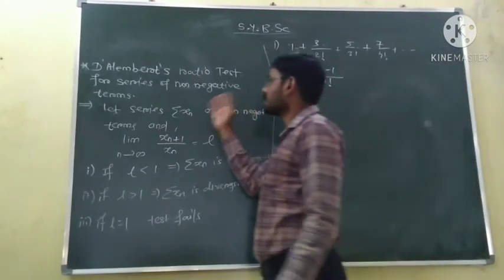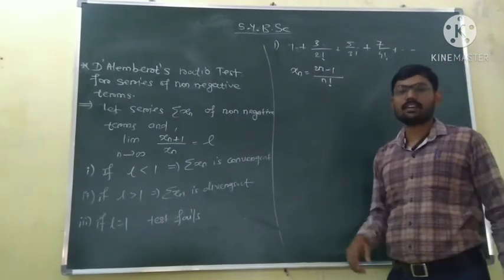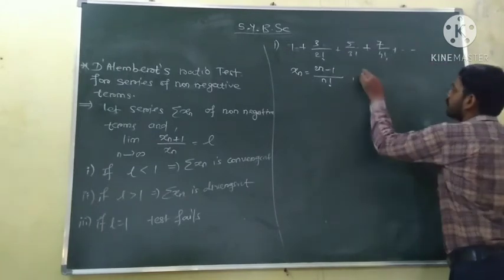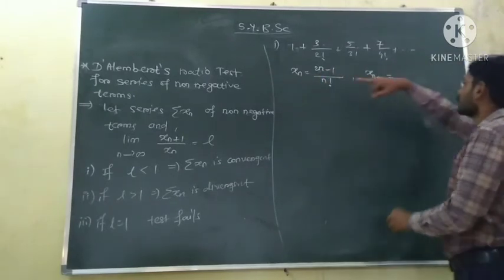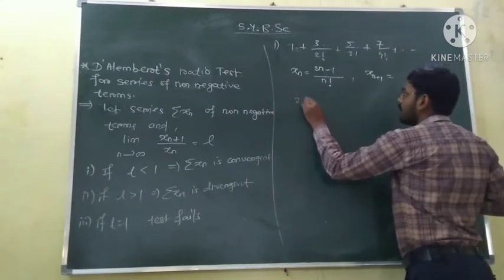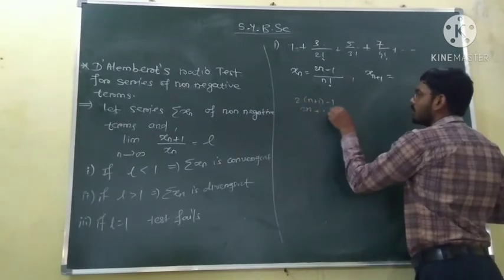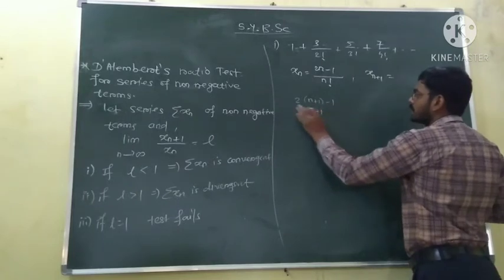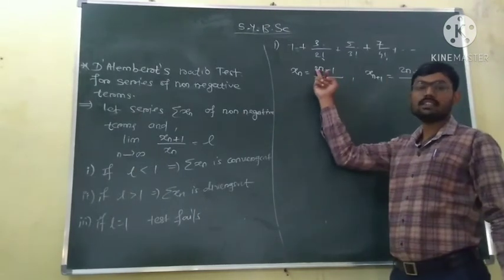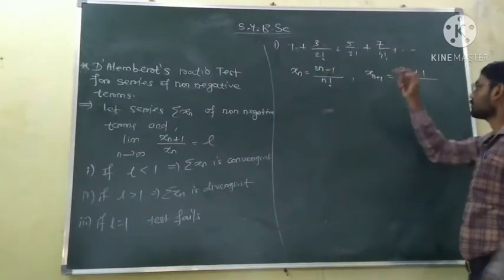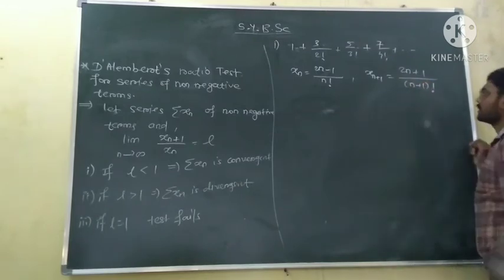To apply D'Alembert's ratio test, we must find the (n+1)-th term. Since we know the n-th term, it is straightforward — replace n by n+1. The numerator becomes 2(n+1)−1 = 2n+1. The denominator becomes (n+1) factorial. So Xn+1 equals (2n+1) divided by (n+1) factorial.